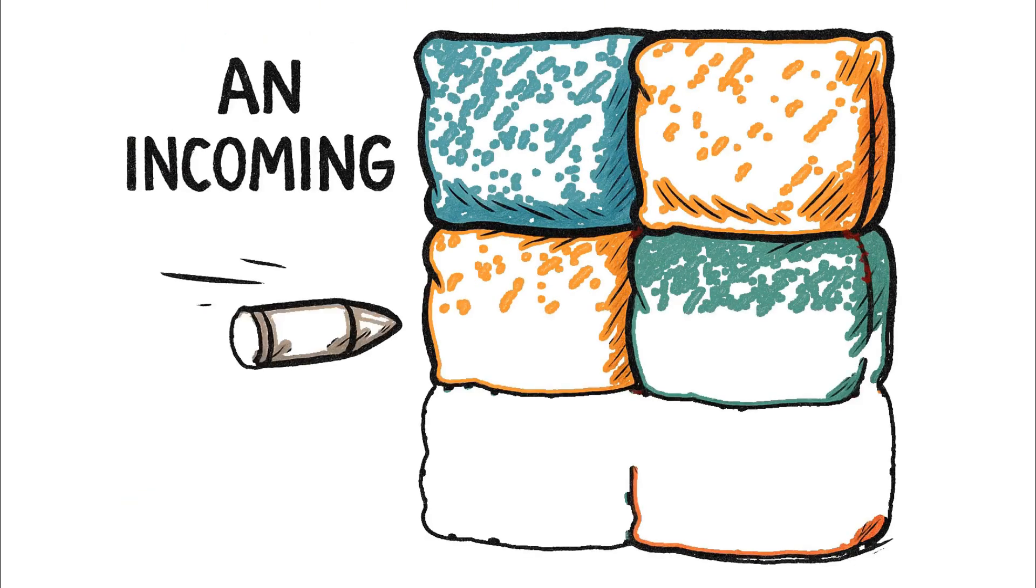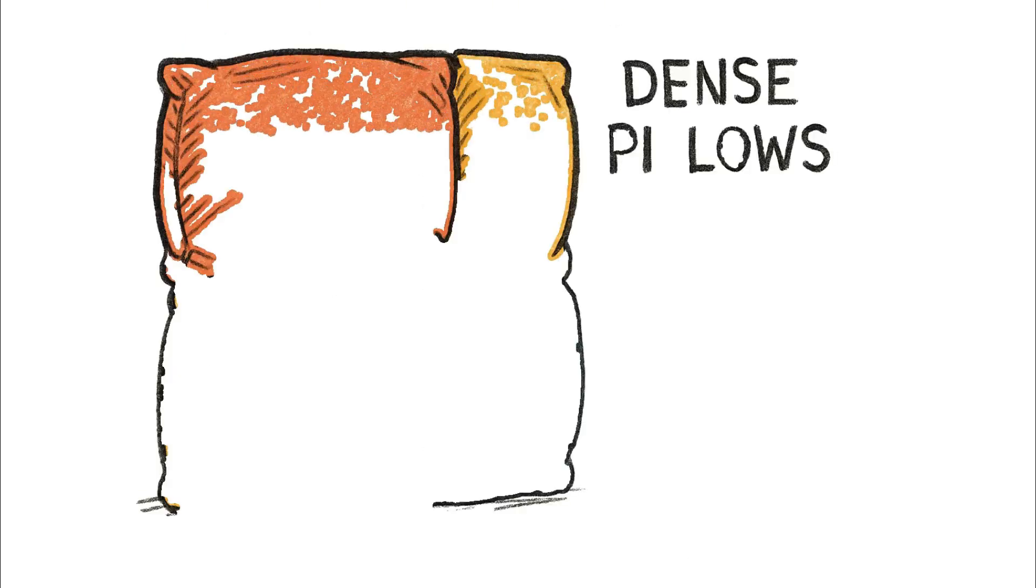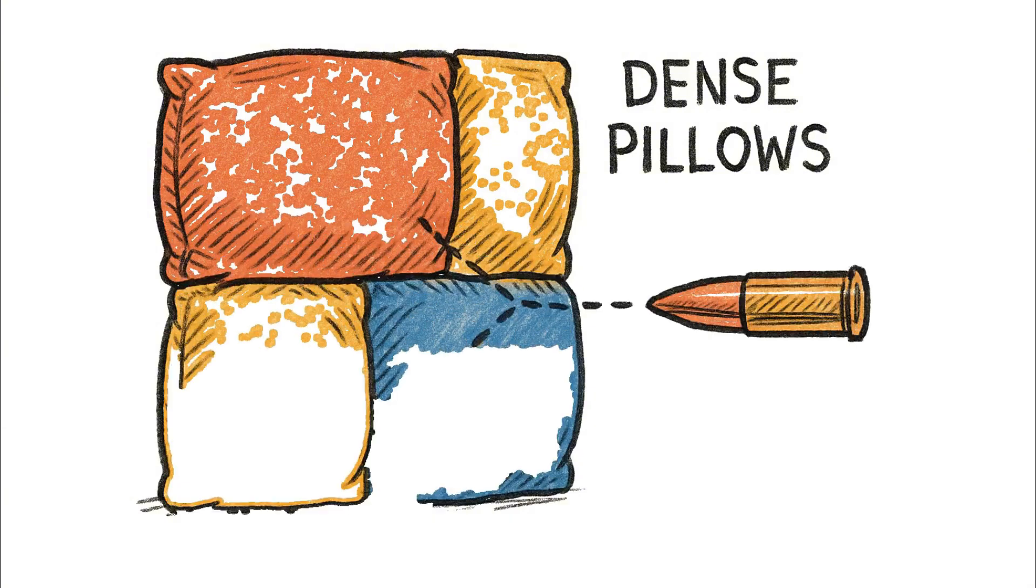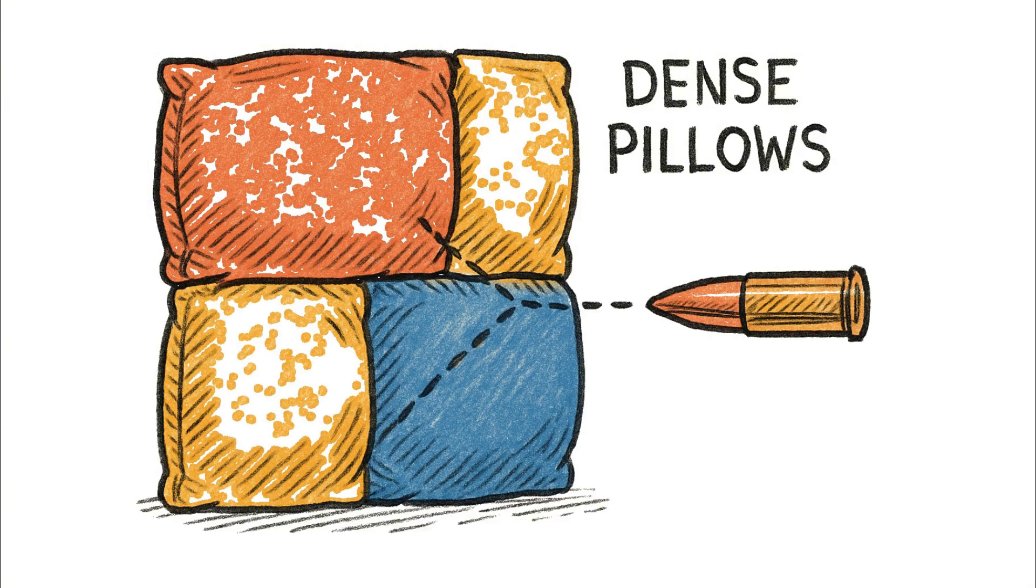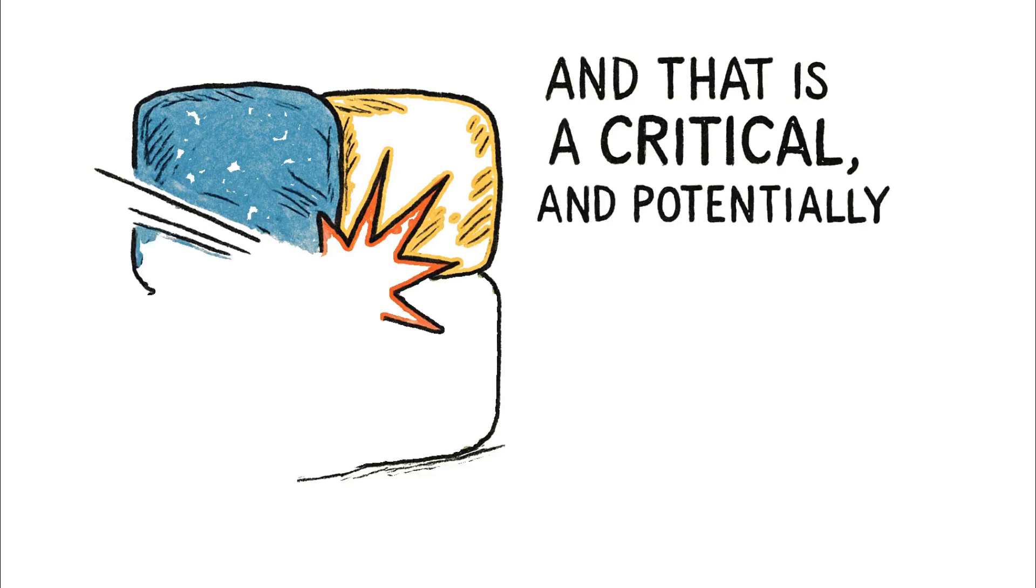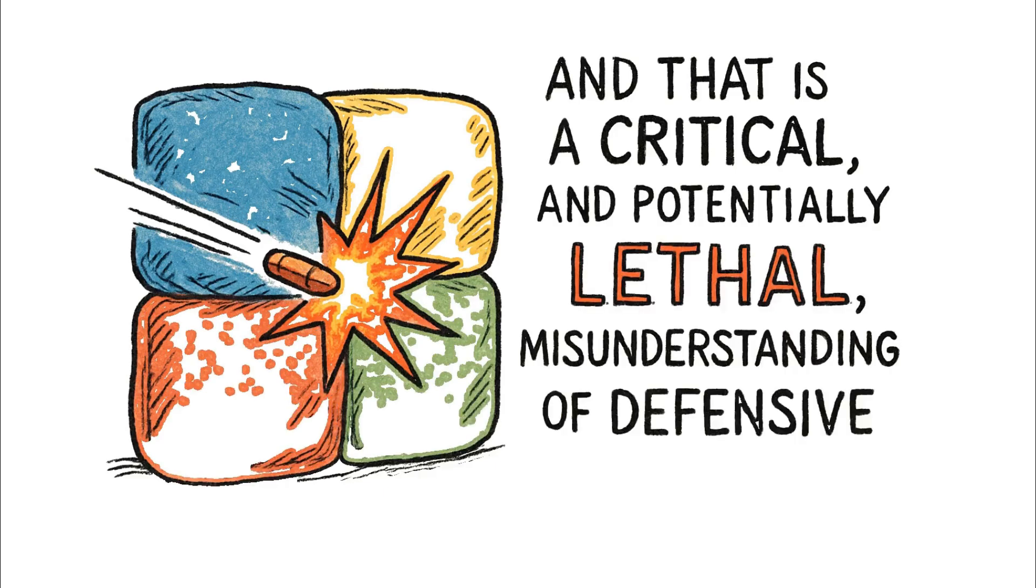An incoming round doesn't see a solid wall. It sees a bunch of dense pillows connected by soft, vulnerable seams, and that is a critical, and potentially lethal, misunderstanding of defensive geometry.